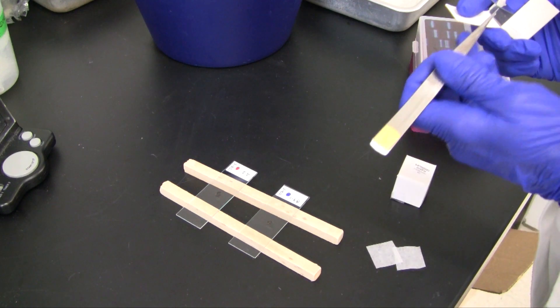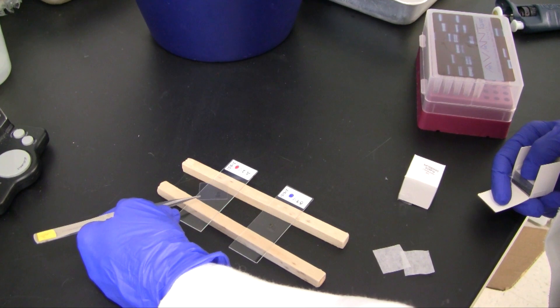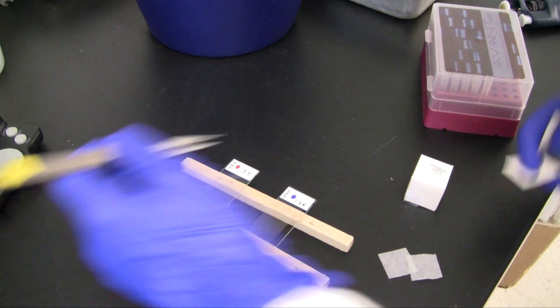Blocking solution is pipetted onto each slide and a plastic cover slip applied so it overhangs the edge of the slide. This will serve as a handle in a later step.